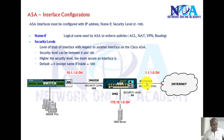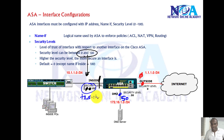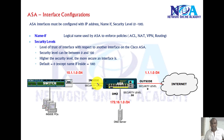Security levels are simply numbering that can be assigned from 0 to 100. We assign a level to each interface — something like 100 on the interface connecting to the LAN, 0 on the outside interface, and 50 on the DMZ. The higher the number, the more trusted that interface is. It's up to you to decide what level of trust you apply on each interface.